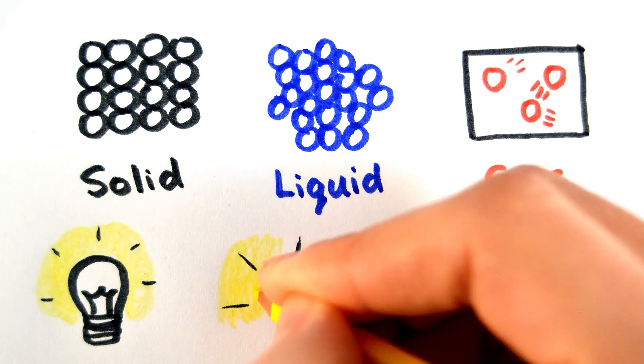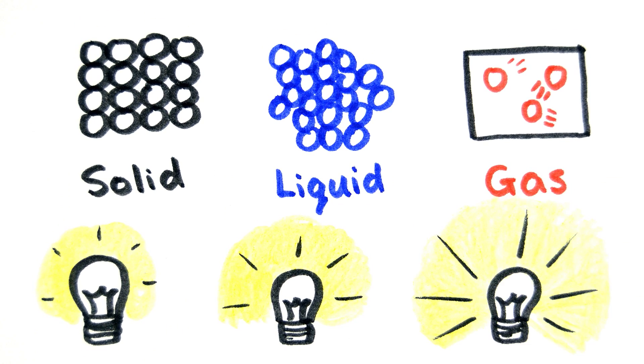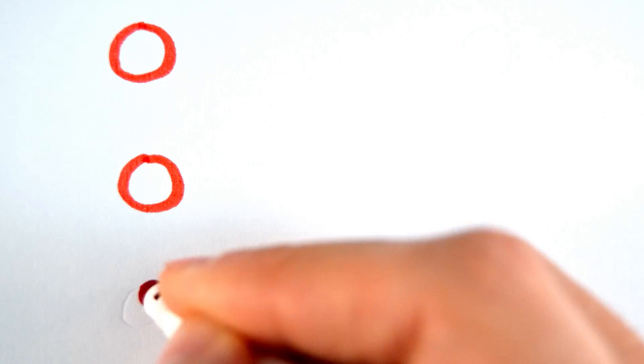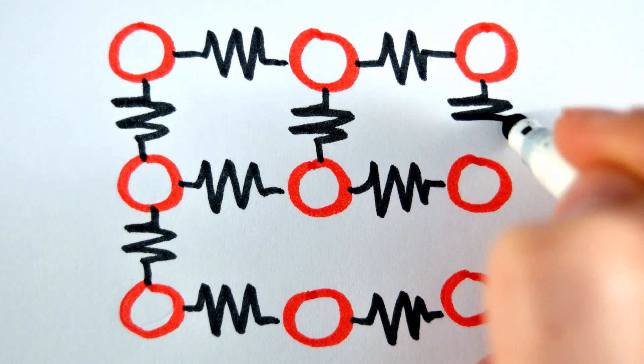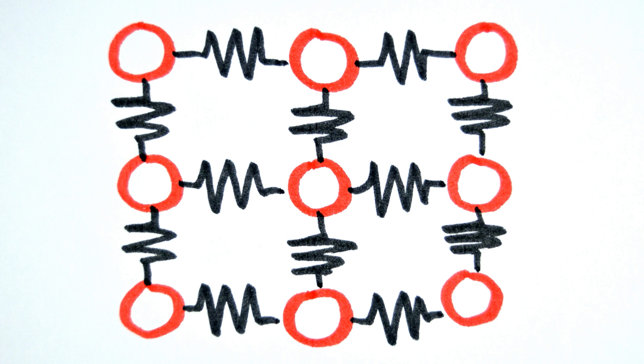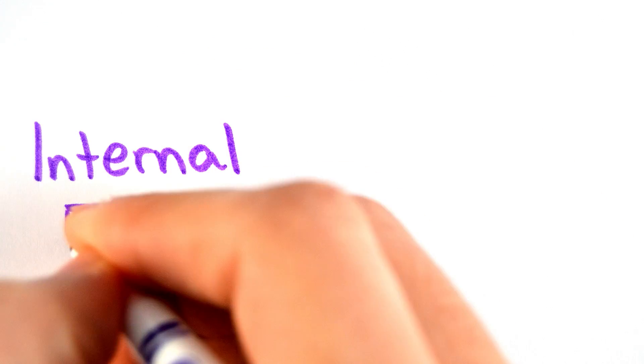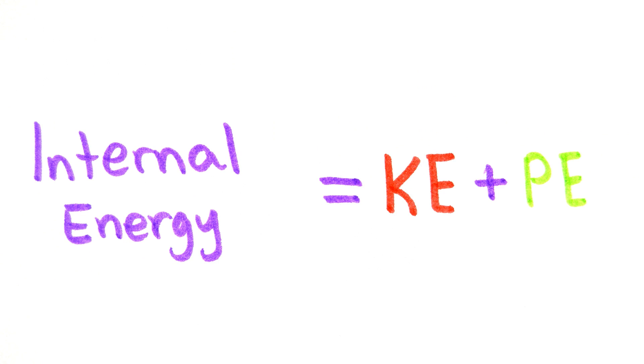This energy comes in two forms within the substance: kinetic energy and potential energy. The kinetic energy is from the movement of the particles within the mass. You can visualize the potential energy as if there were springs between the particles in a solid which forces them to vibrate about their fixed positions. The sum of the randomly distributed potential energy and kinetic energy of the particles in the system is called the internal energy.